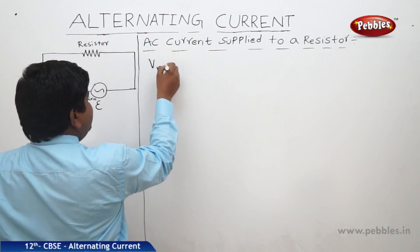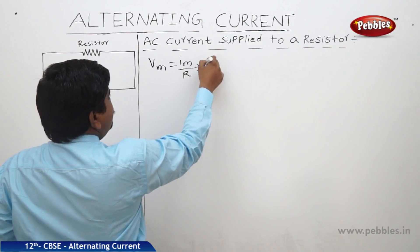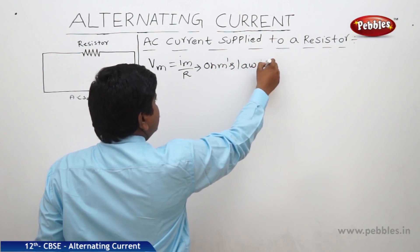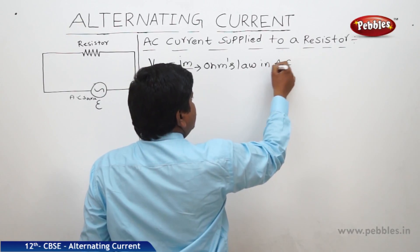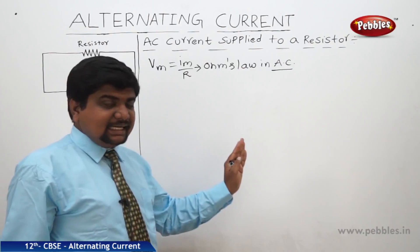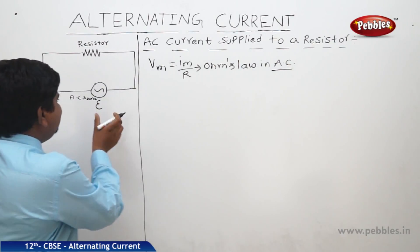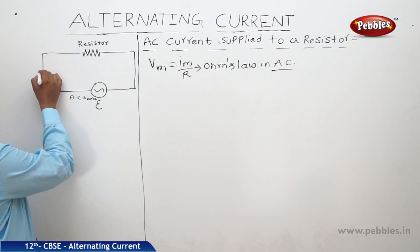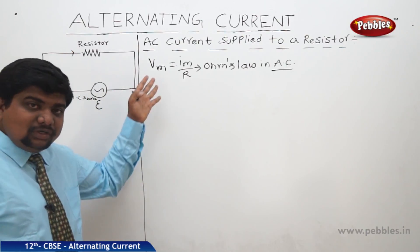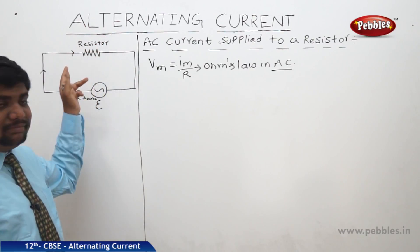We obtained one equation: Vm = Im × R, which is Ohm's law in AC current. Therefore, Ohm's law is valid for both DC currents and AC currents. Now, whenever an alternating voltage passes through a resistor, there is not only a voltage drop and current, but also the possibility of power consumption by the resistor.